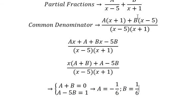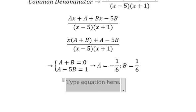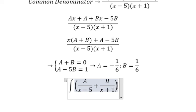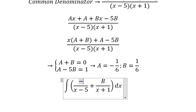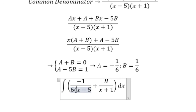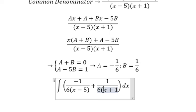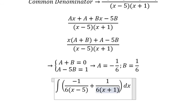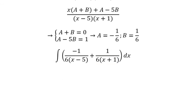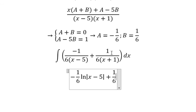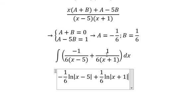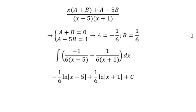So we put them back in here. A is negative 1 over 6, B is 1 over 6. And now we got the final answer. That's the end, thank you for watching.